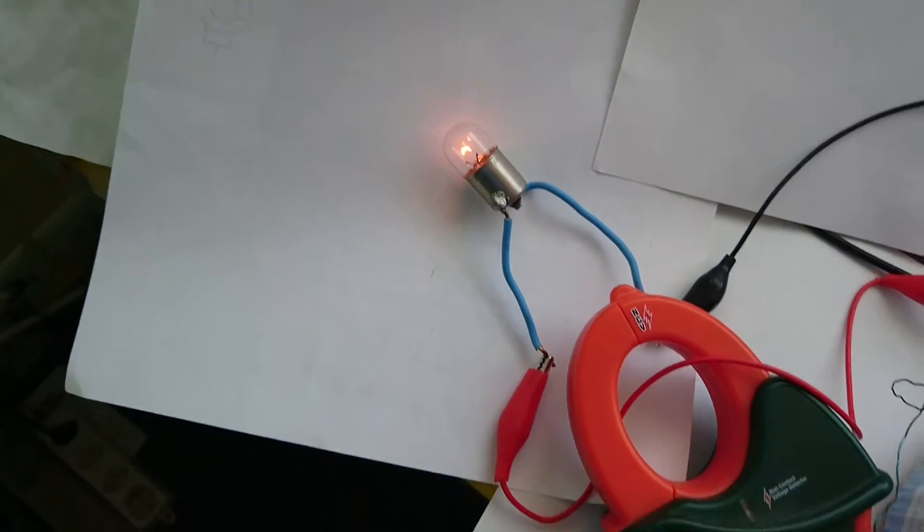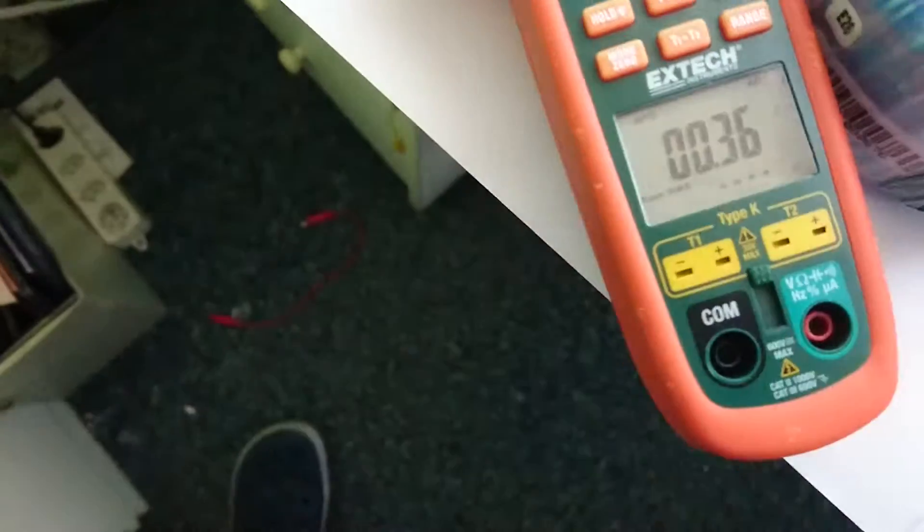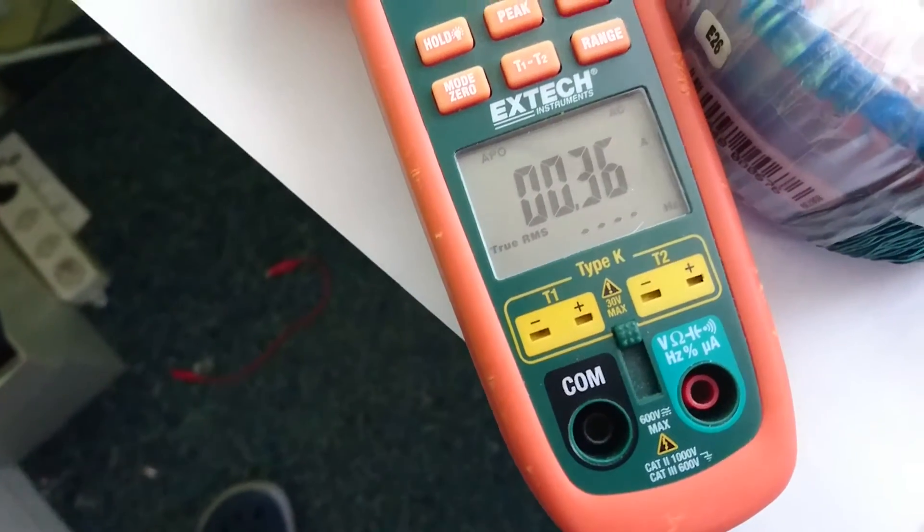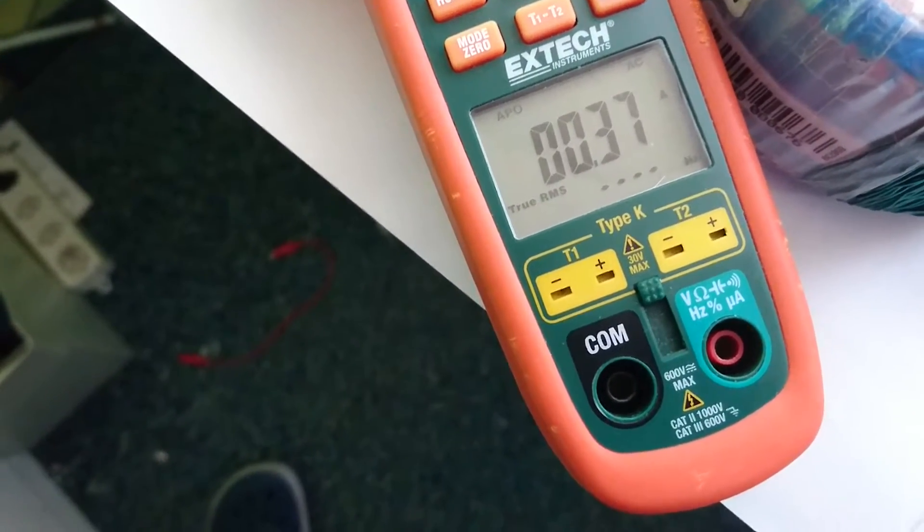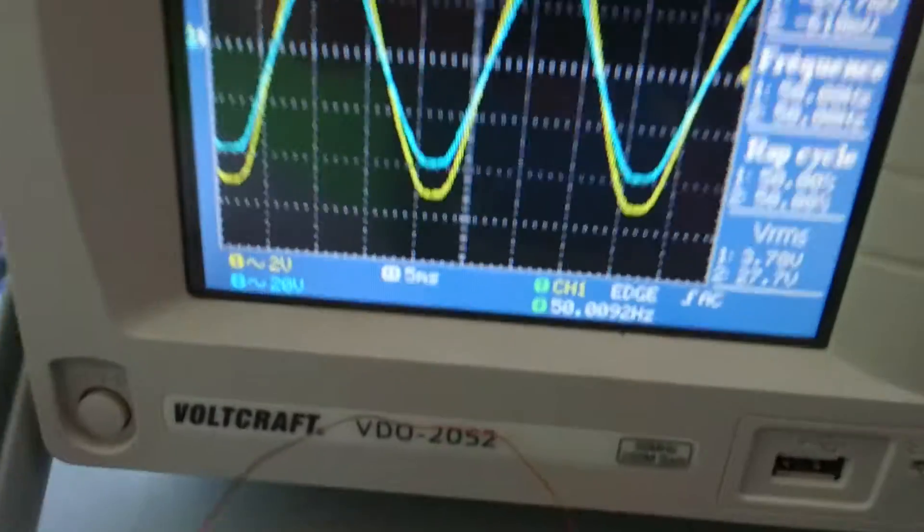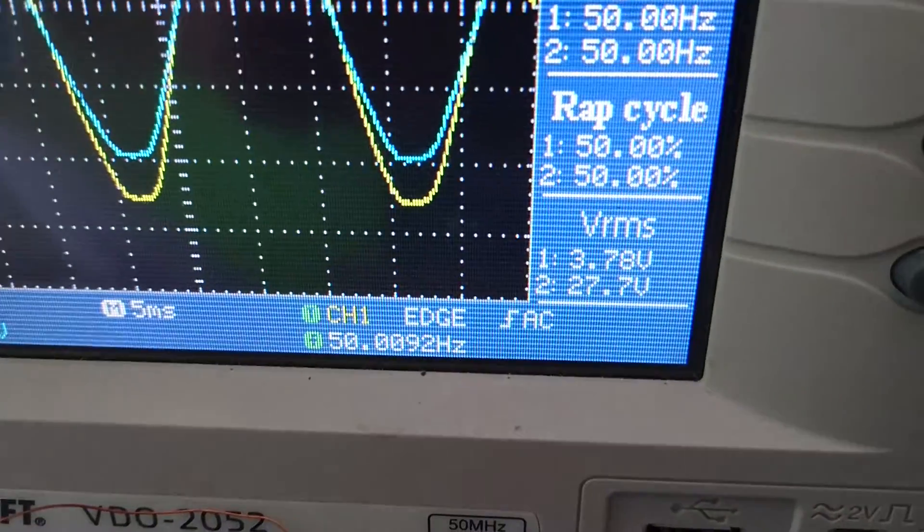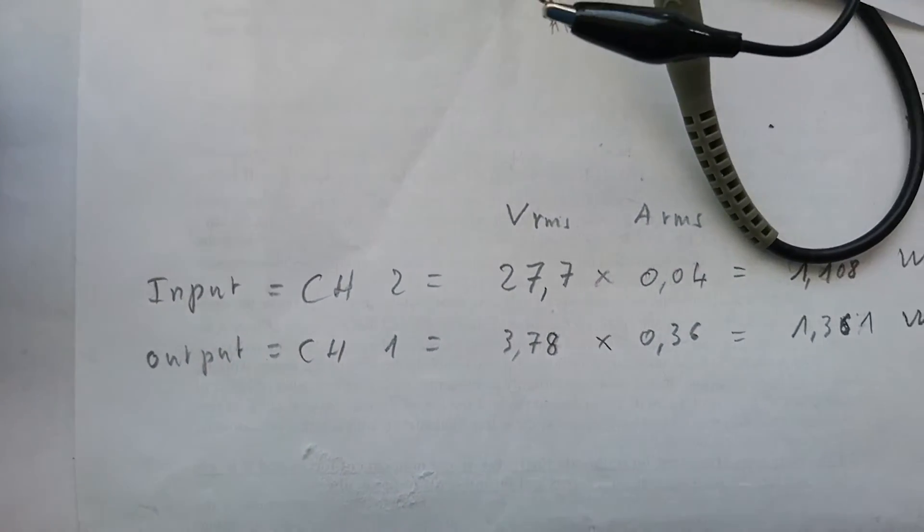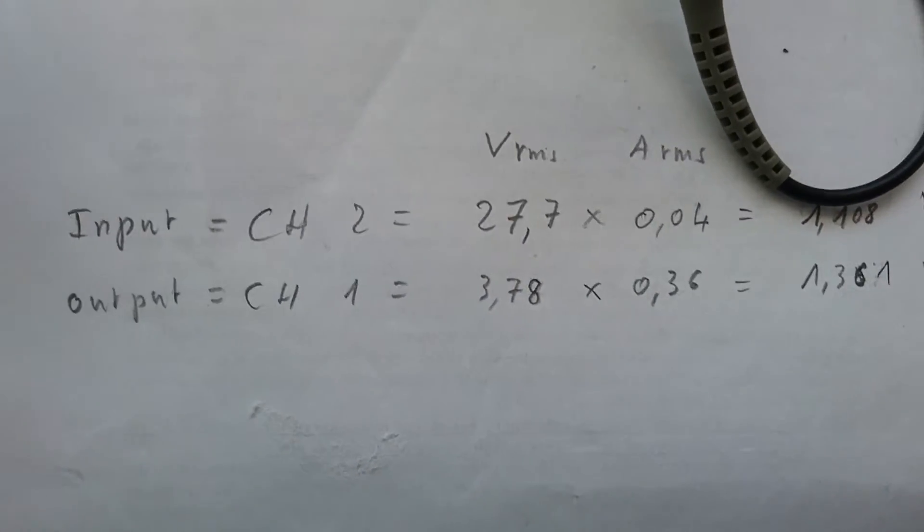See the lamp is glowing, not so much. We have 0.36 amps at 3.78 volts. So if we make the calculation here...